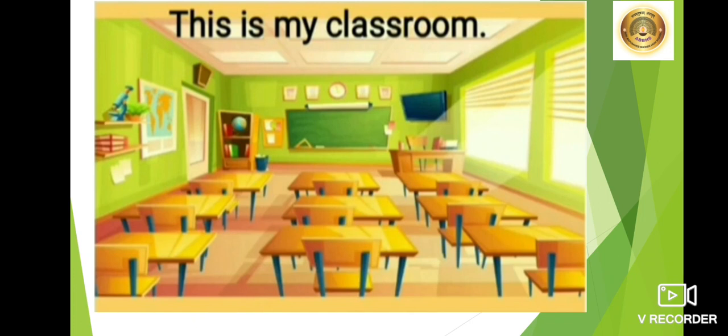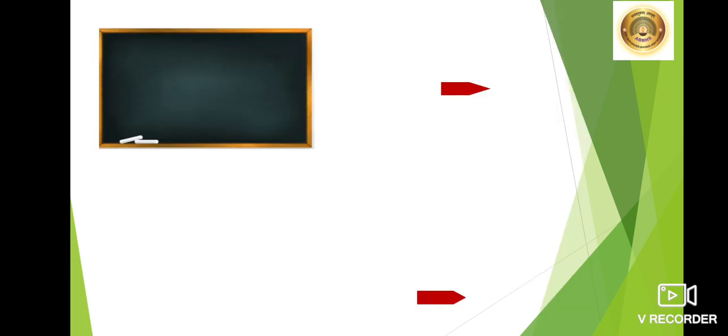Now tell me children, what do you see in this picture? Yes, it is a picture of our classroom and what things you see in the classroom? Let's see. See this picture — it is a picture of a blackboard. Now what does the teacher do on the blackboard? Yes, she writes with a chalk. All the things she teaches in the lessons.